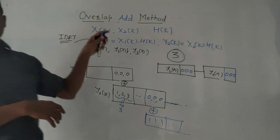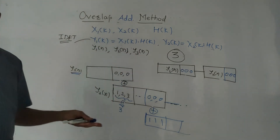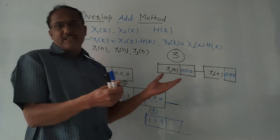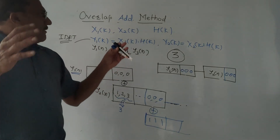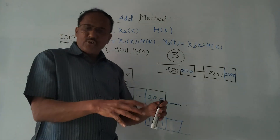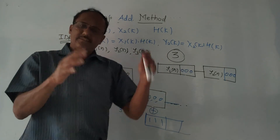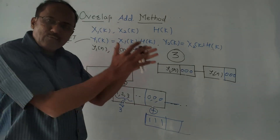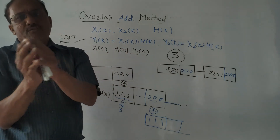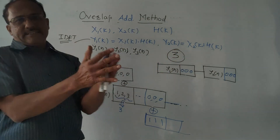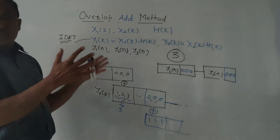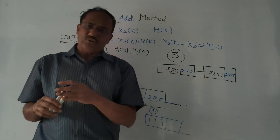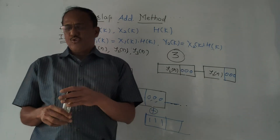I have explained the two methods — overlap save method and overlap add method — which are very important for practical DSP applications. The DSP processor has limited memory, so we form different blocks, perform filtering of each block separately, and then cascade the blocks. That's it for today's lecture. If you liked this video, don't forget to like and subscribe to the channel. Thank you very much.